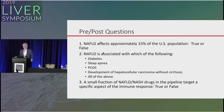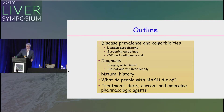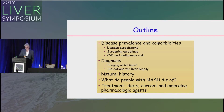Just a small fraction — I'll convince you otherwise. My outline covers disease prevalence and comorbidities, disease associations, screening guidelines, cardiovascular disease risk, and malignancy risk. Also how to make the diagnosis including emerging imaging assessments, indication for liver biopsy, natural history, what patients with NASH die of, and treatment options including diets and current and emerging pharmacologic agents.